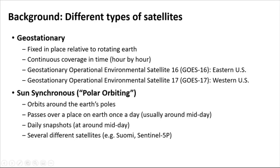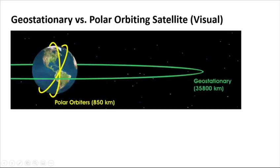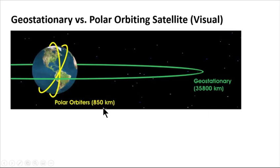There are many polar orbiting satellites deployed. We will look at measurements from two, SUOMI and Sentinel-5P, in Part 2 of this video. A simple visual of geostationary and polar orbiting satellites is shown here. Geostationary satellites rotate along a path following the Earth, whereas polar orbiting satellites rotate in polar orbits. The approximate heights of each above the Earth are also indicated. Geostationary satellites are around 35,000 kilometers above the surface, and polar orbiters around 850. Each is above the height of the atmosphere of around 500 kilometers.